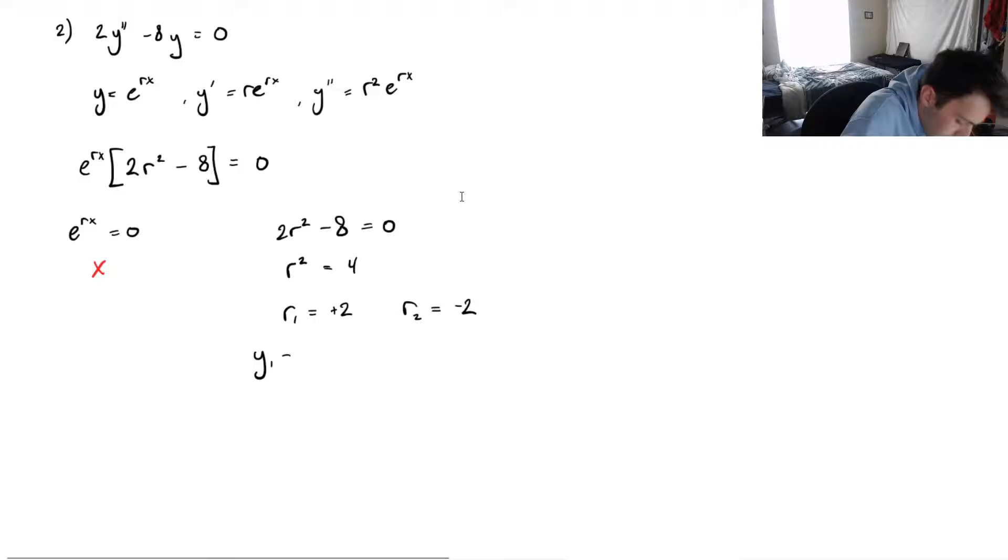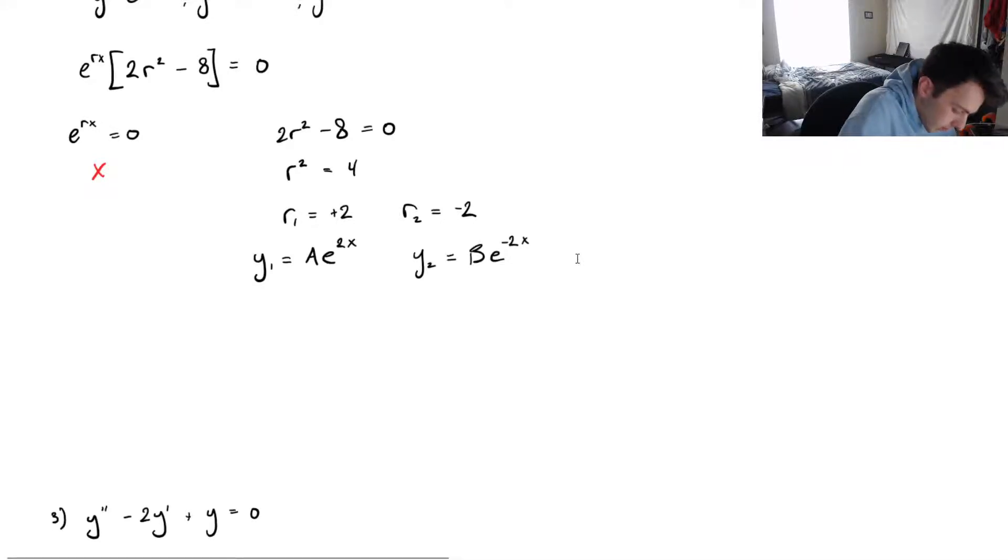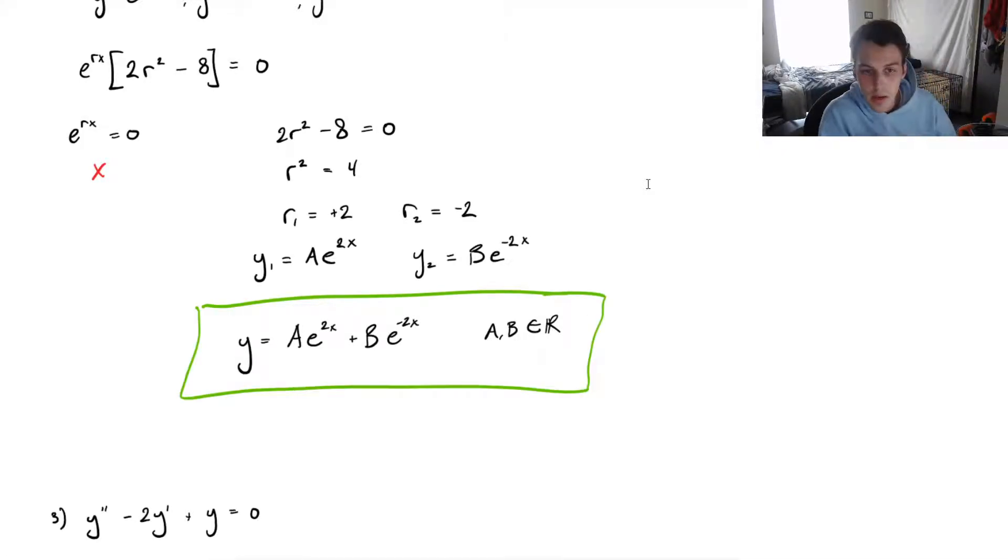One of our solutions, call it y1, will be equal to some constant a times e to the r1x, y2 will be equal to some constant b times e to the negative 2x. And remember, we're doing the general solution here. So, our general solution will be the linear combination of our two solutions that we find. So, our general solution is ae to the 2x plus be to the minus 2x, where a and b are both constants. And that's it for this case. Definitely the most straightforward.